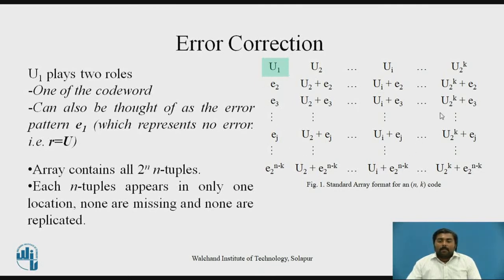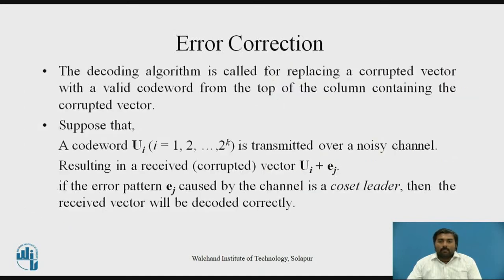This array contains all 2 raised to n n-tuples with no repetition and no missing elements. Now, we have detected the error — let's decode it. The decoding algorithm involves replacing a corrupted vector with the valid codeword from the top of the column containing that corrupted vector. In the standard array, if you have a corrupted vector, the corresponding top of the column holds the corrected codeword, so you can replace it.